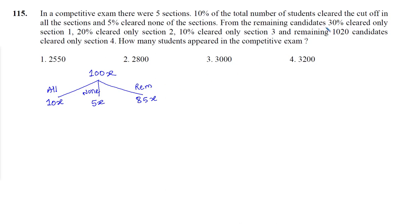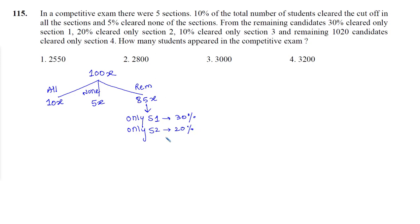Out of these remaining students, the remaining percentages are applicable on this 85x. Out of this 85x, 30% cleared only section 1, which is 30% of 85x. Then only section 2 is 20% of 85x. Then only section 3 is 10% of 85x. And the remaining 1020 candidates cleared only section 4.